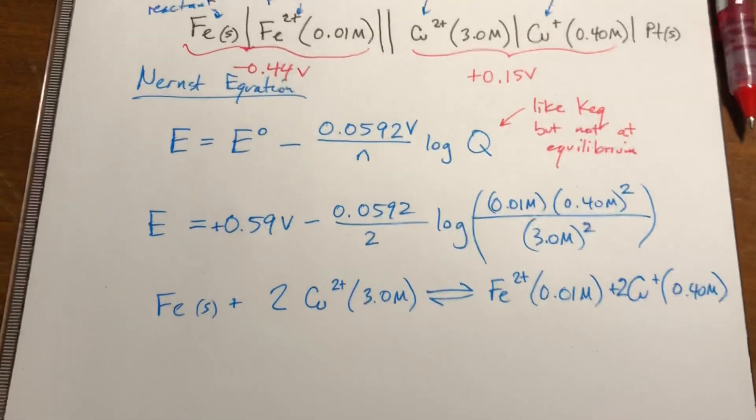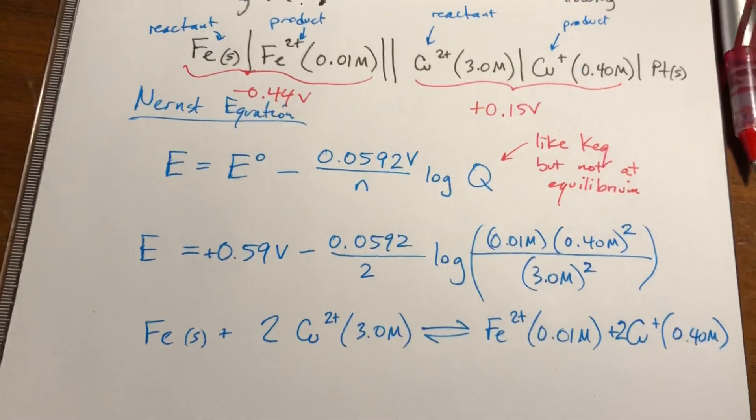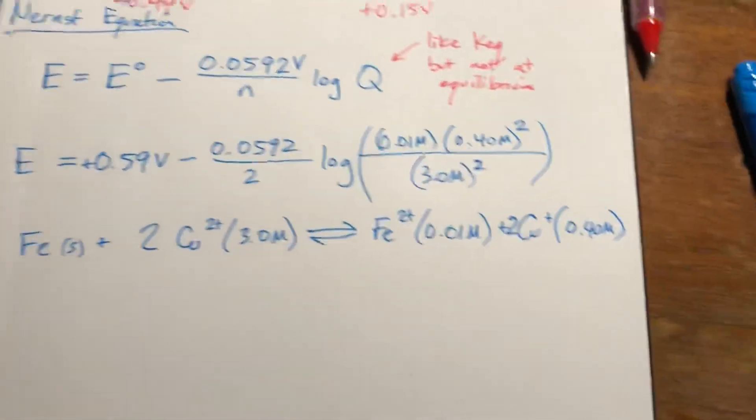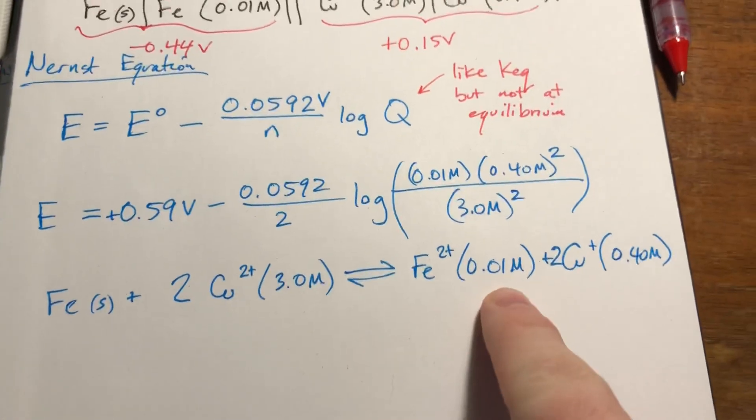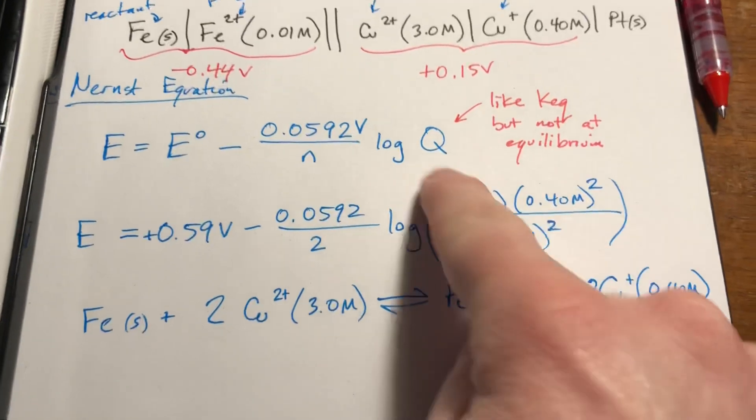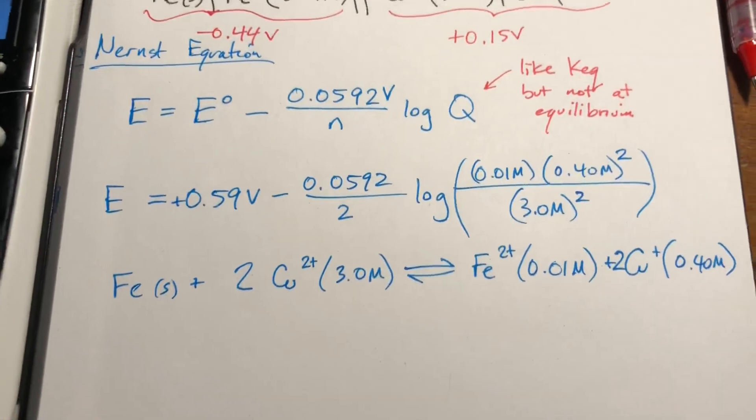So this balancing part was just so that we knew what the coefficients were in our products over reactants, KEQ, or Q thing. Okay?